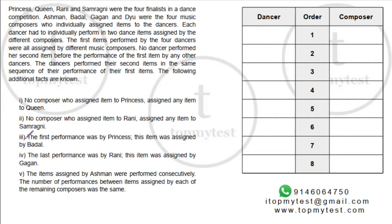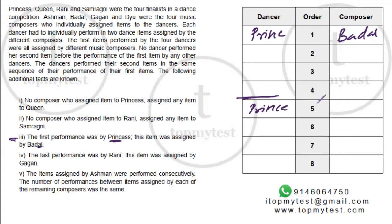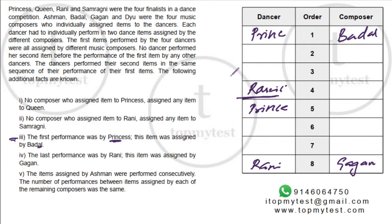Let's fill in the available data. The third statement says the first performance was by Princess and the item was assigned by Badal — so position 1 is Princess/Badal, and position 5 will also be Princess (but not Badal). The last performance was by Rani and the item was assigned by Gagan — so position 8 is Rani/Gagan, which means position 4 is also Rani. So Queen and Samaragini must occupy positions two and six, or three and seven.